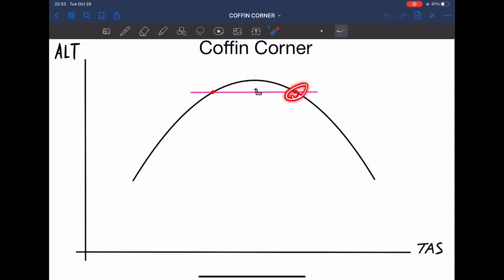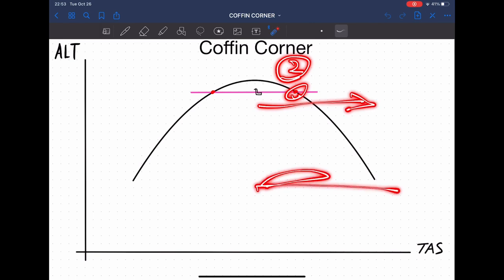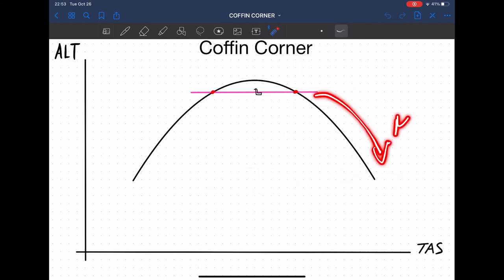Number two, high-speed mop buffet. As you increase your forward velocity, the airflow accelerates over the wing and causes a shockwave. That shockwave induces airflow separation. That could cause a phenomenon called mop tuck.